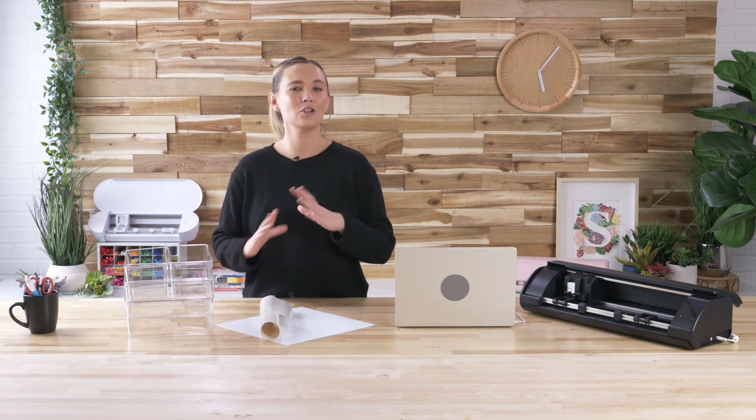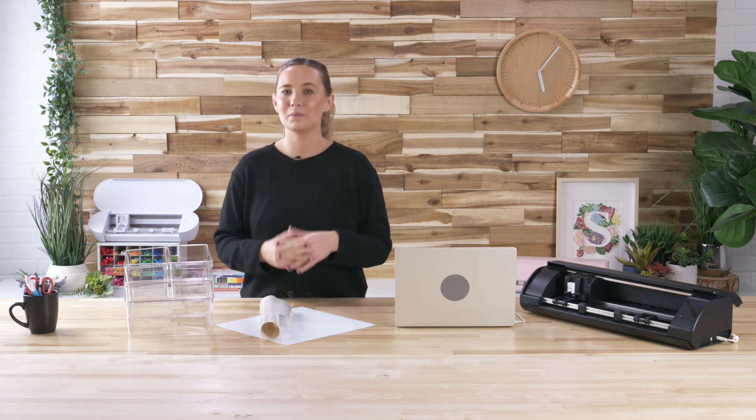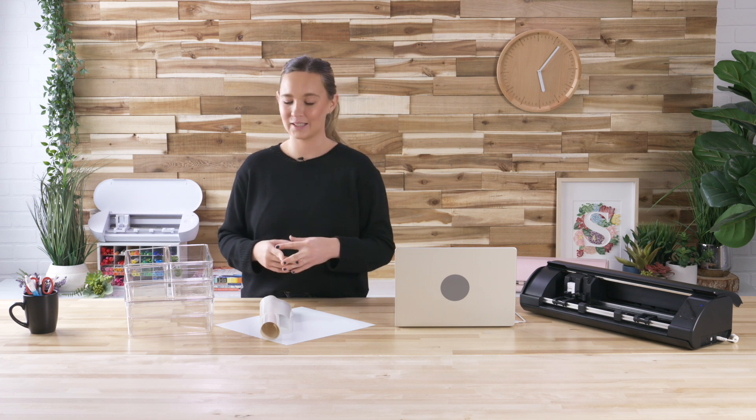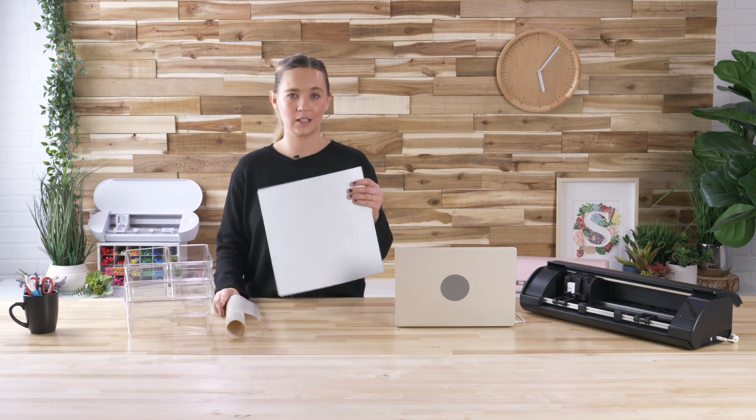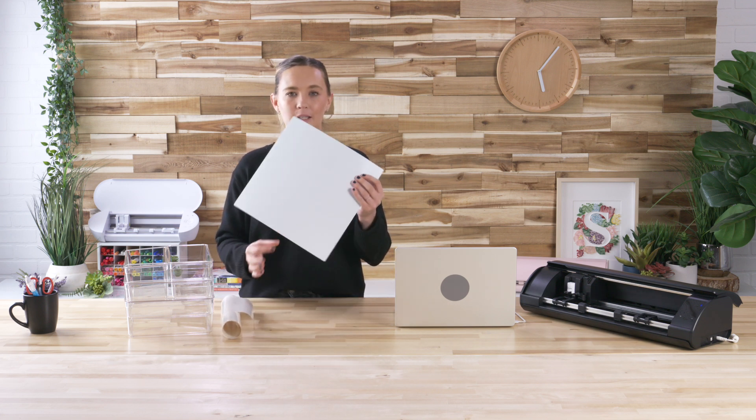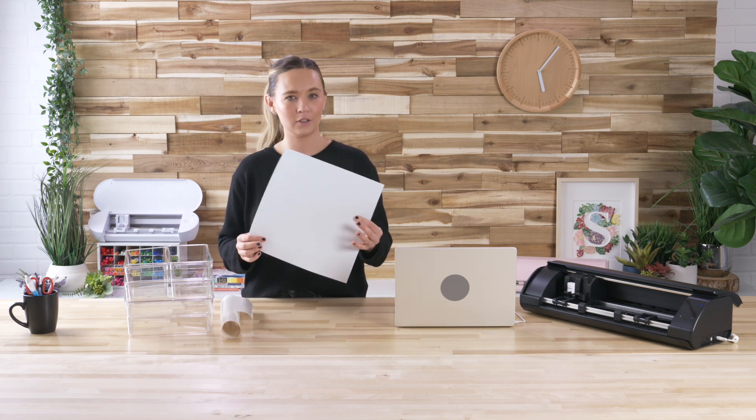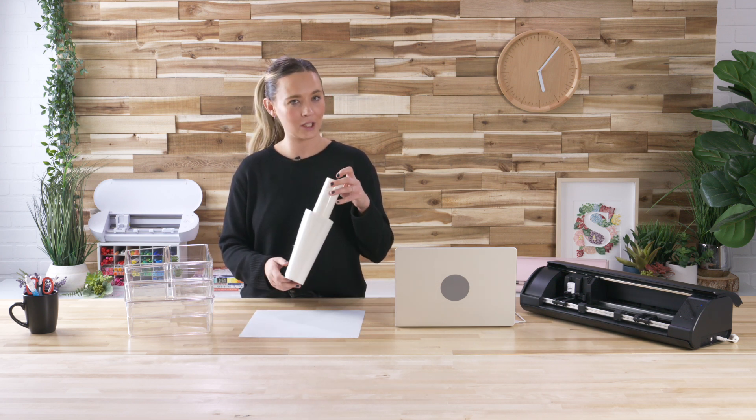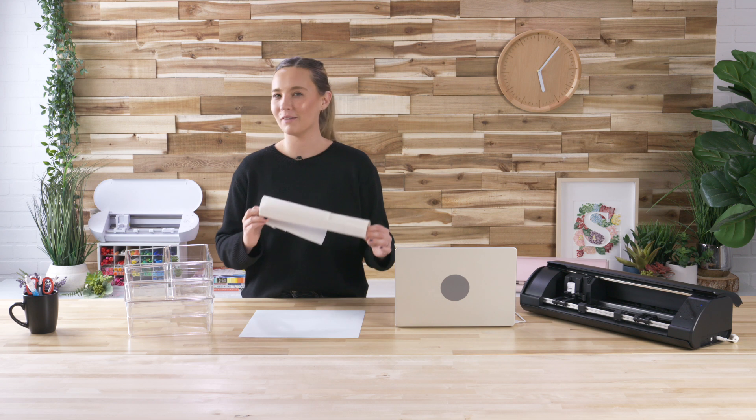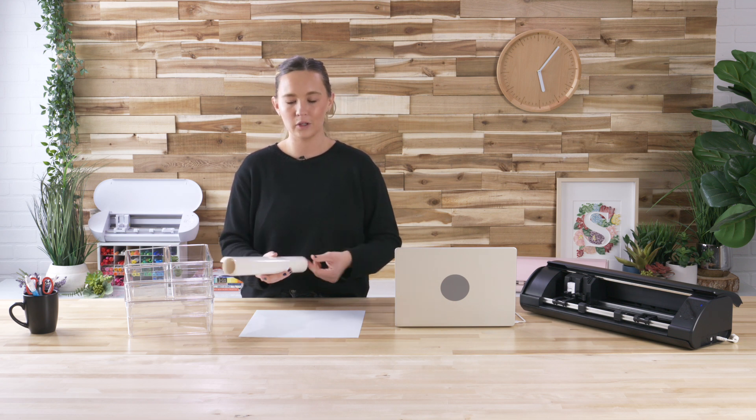Let's begin by going over the supplies that we're using today. This is a super simple vinyl project, so especially if you're a new Silhouette user, I promise you can make this today. Just to start out, I have a sheet of Oracal 651 vinyl. I got this at Michaels, but you can get it at a lot of different craft stores. And then I also have Oratape, which is my transfer tape of choice, but you can use whatever transfer tape you might have on hand also. Those are the two must-haves for the project.